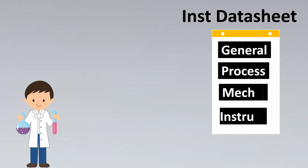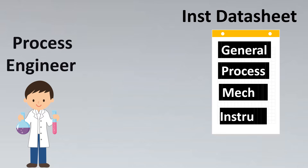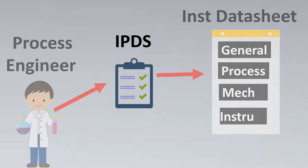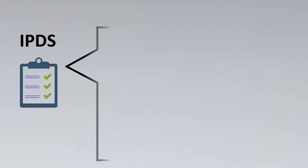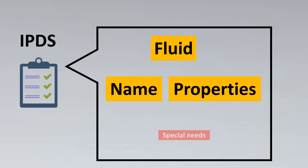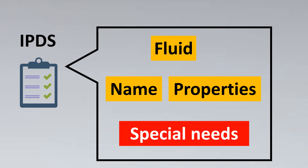The next step is to get the process data. For this, the process engineer would be very helpful. They prepare a document called IPDS — Instrument Process Data Sheet — and this is the basis to fill the process section of an instrument data sheet. IPDS basically contains the fluid, its name, properties, and some special needs — for example, if it's corrosive, toxic, erosive, etc.